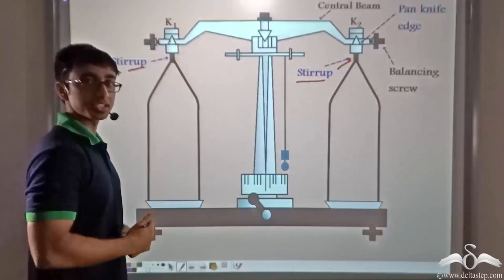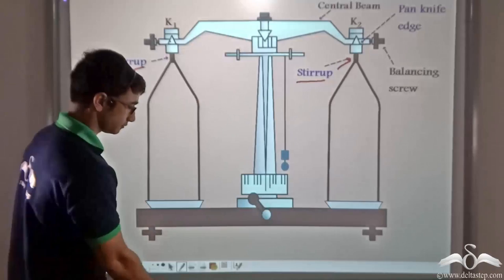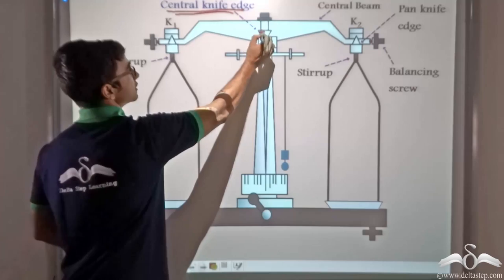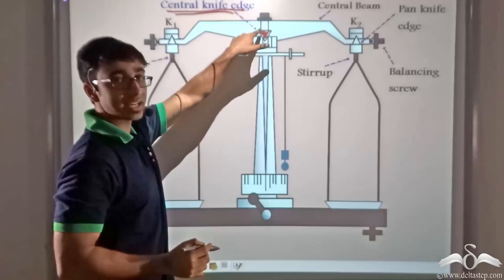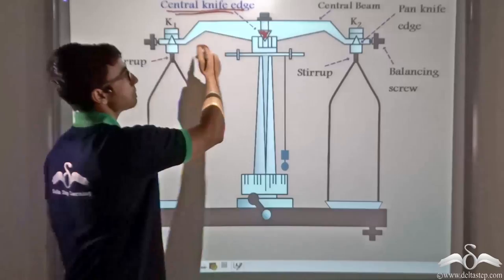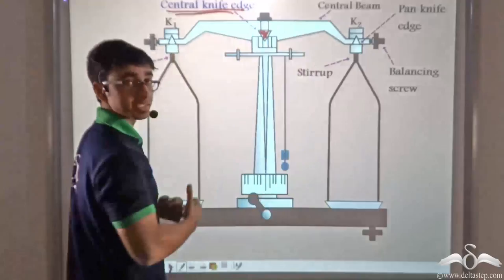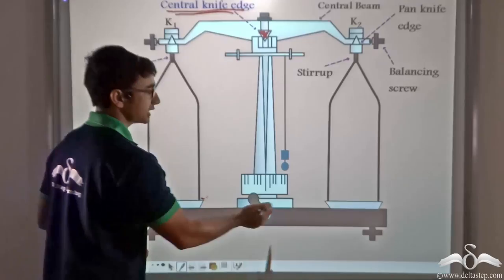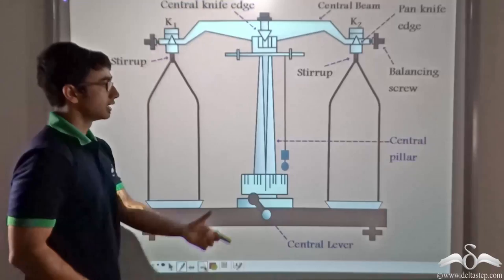If you notice closely, there is another knife edge at the centre of the central beam, known as the central knife edge, which points in the downward direction. Together with the pan knife edges, it is responsible for keeping the central beam in place. The pan knife edges support the pans, whereas the central knife edge is primarily responsible for supporting the central beam on the rod.